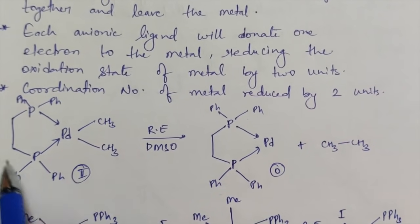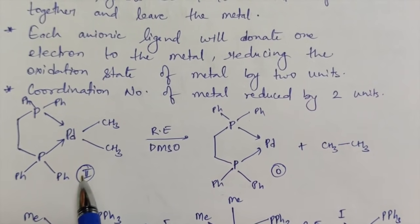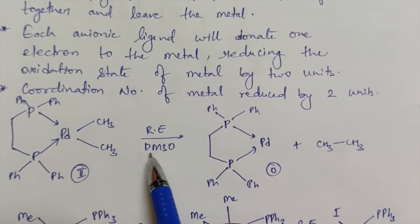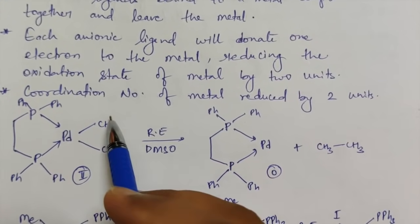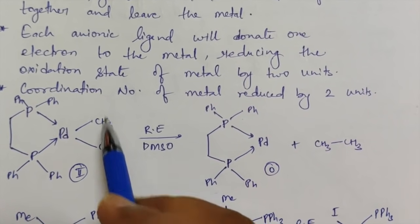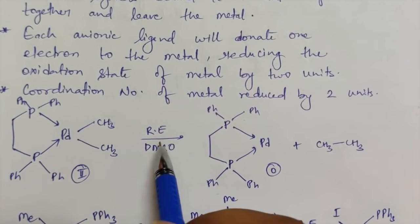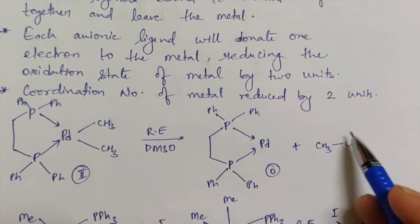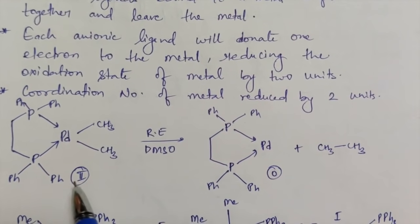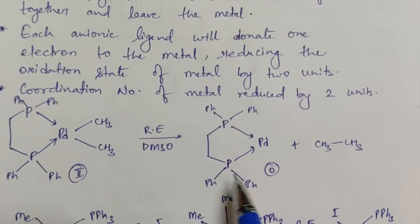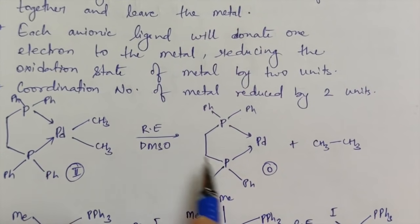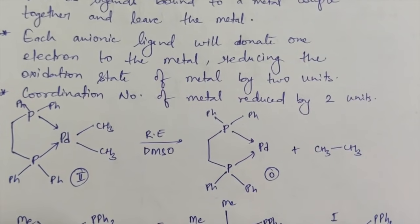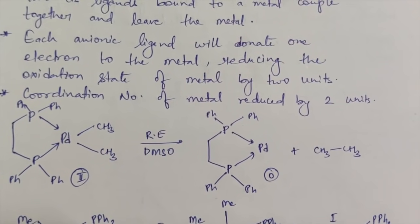For example in this complex, palladium is in plus two oxidation state. Reductive elimination takes place in the presence of DMSO. These two cis CH3 ligands will leave the complex, form an ethane molecule, and the oxidation state of palladium will reduce from plus two to zero. There is a reduction happening for palladium and elimination happening, so this reaction is called reductive elimination.